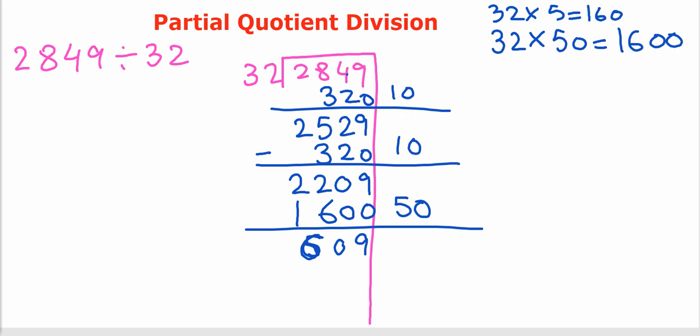Again, can I do this? 32, 10 times is 320. What will be left with me? 9 minus 0 is 9. Make it 5, make it 10. 10 minus 2 is 8. 5 minus 3 is 2. 289.